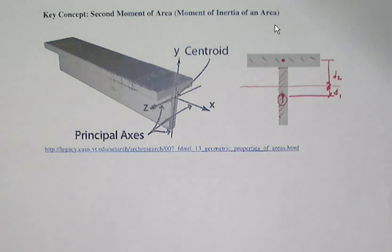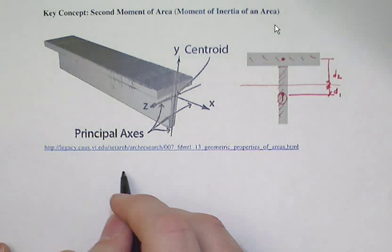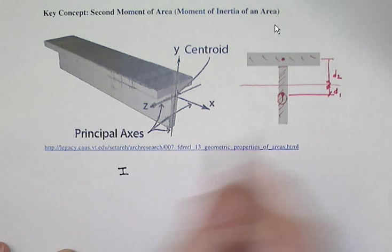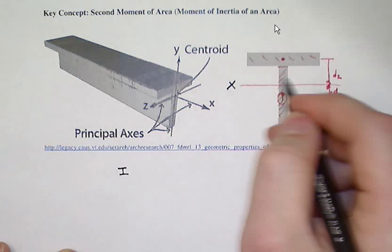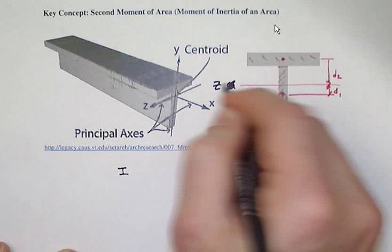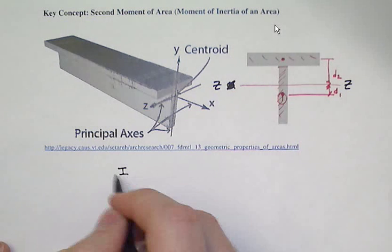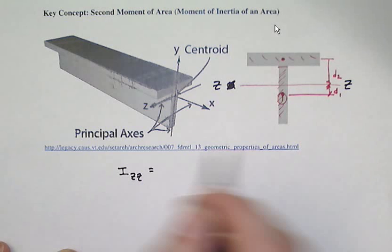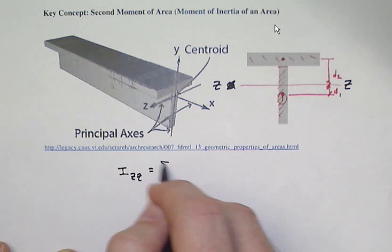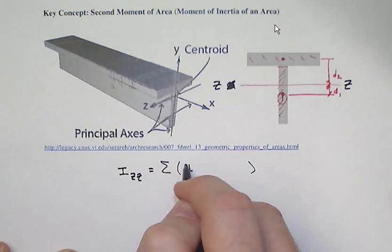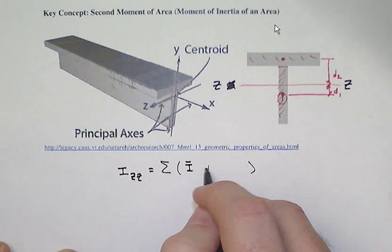This idea of the second moment of area about the centroid of the whole is going to be given to us by the parallel axis theorem. I about this new axis, let me call that the z-z axis, so I_zz is going to be the sum of the individual centroidal second moments of area plus those areas times the distance that I'm moving it squared.